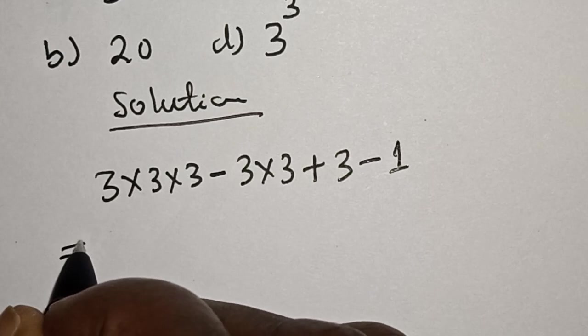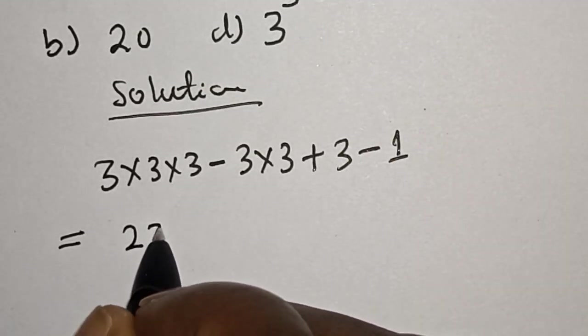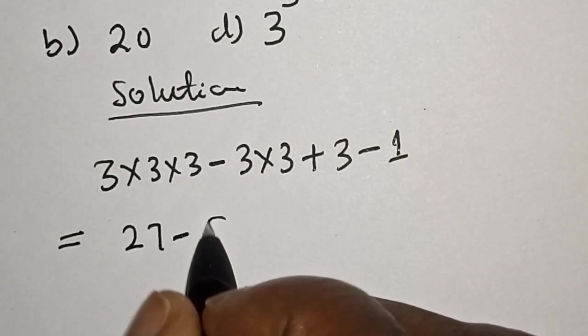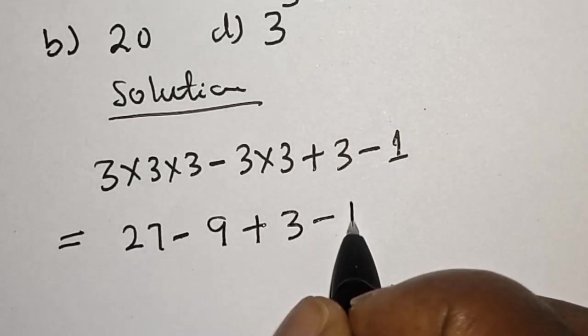This is equal to 3 times 3, 9 times 3, 27 minus 3 times 3, 9 plus 3 minus 1.